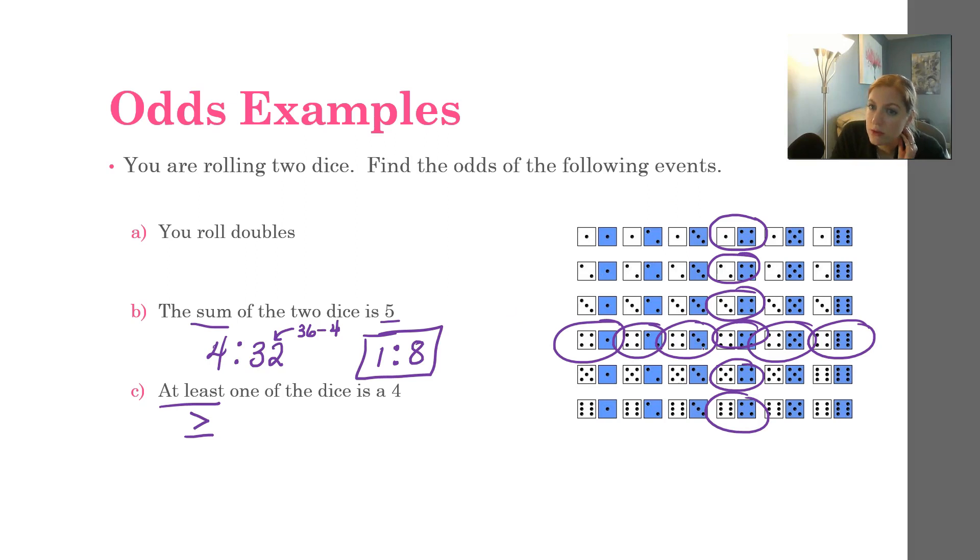It looks like 1, 2, 3, 4, 5, 6, 7, 8, 9, 10, 11. So it looks like 11 ways to get a dice that has a 4 on it. How many ways to not get a dice with a 4 on it? Well, you could go ahead and count everything that's not circled, or you can just take the total, which is 36, and subtract off how many outcomes fit that situation. So 36 minus 11 is going to be 25. And this does not reduce because 11 is a prime number, so we just leave it. For every 11 rolls that contain at least a 4, there's 25 that don't.